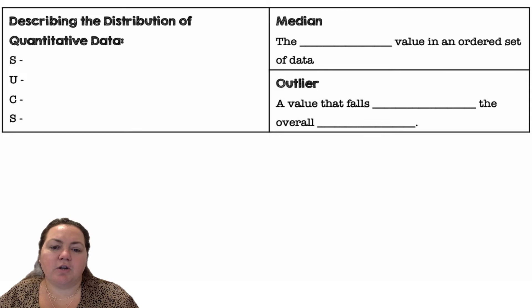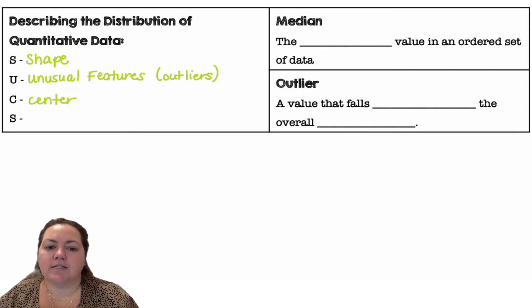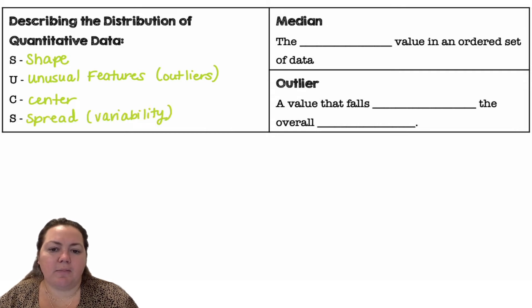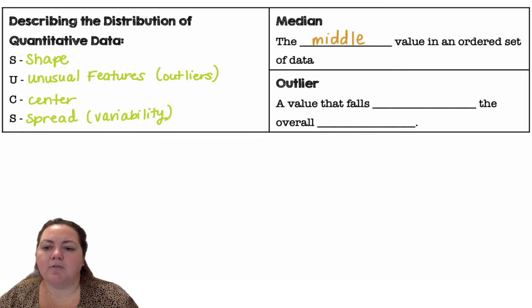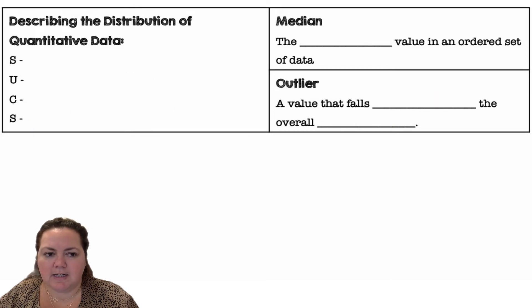When you're asked to describe a distribution for quantitative data, you want to use the acronym SUCKS, which stands for shape, unusual features — which includes outliers — center, and spread. Spread is also sometimes called variability. The median is the middle value of the ordered set of data. And an outlier is a value that falls outside the overall pattern; it doesn't really fit with the trend of the rest of the data.